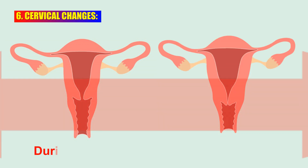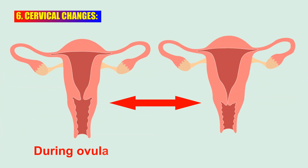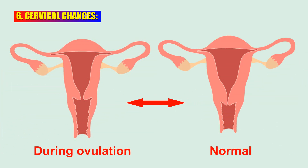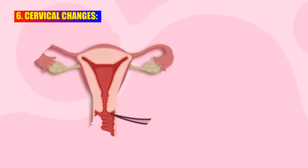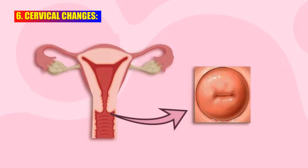Women's cervical position can change during ovulation. Your cervix may be larger than regular at this time. If you insert a finger, you can find a small nub — this nub is your cervix — but at other times you cannot find this place.